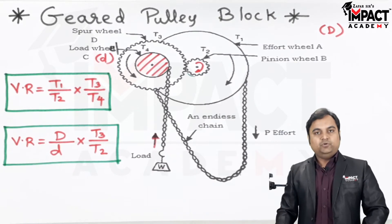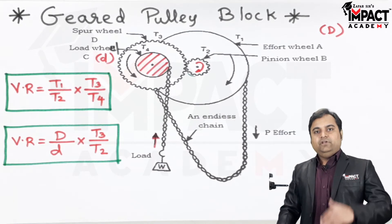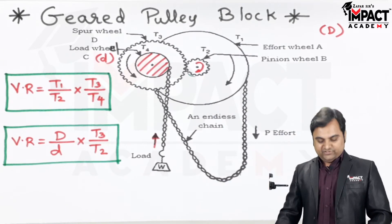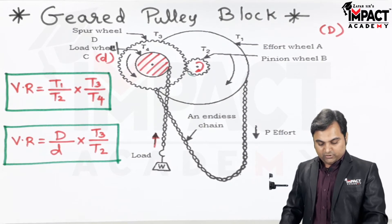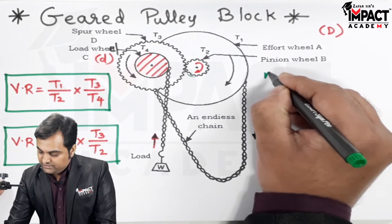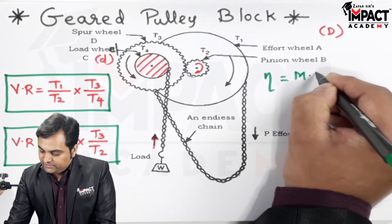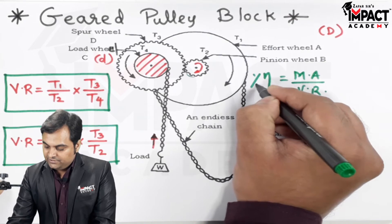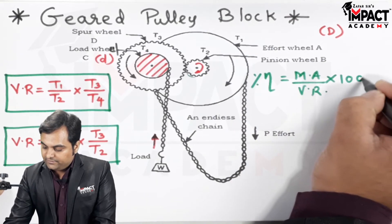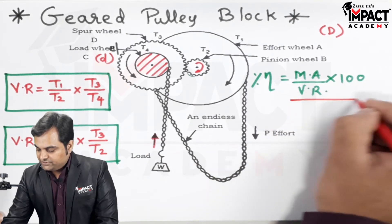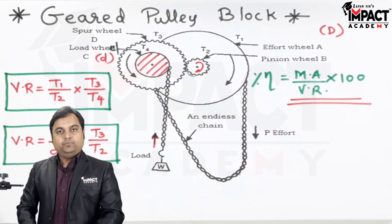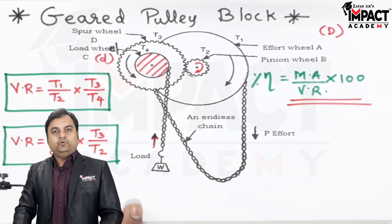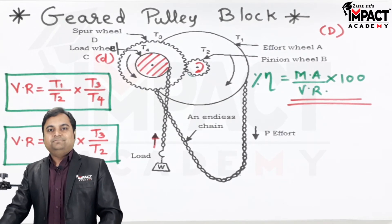Once we know the velocity ratio, and if we know the mechanical advantage — which is load divided by effort — we can easily calculate efficiency using the formula: efficiency equals mechanical advantage divided by velocity ratio. For percentage efficiency, multiply by 100. In this way the efficiency is calculated for a geared pulley block, which is a simple machine where relatively less effort lifts a large load.